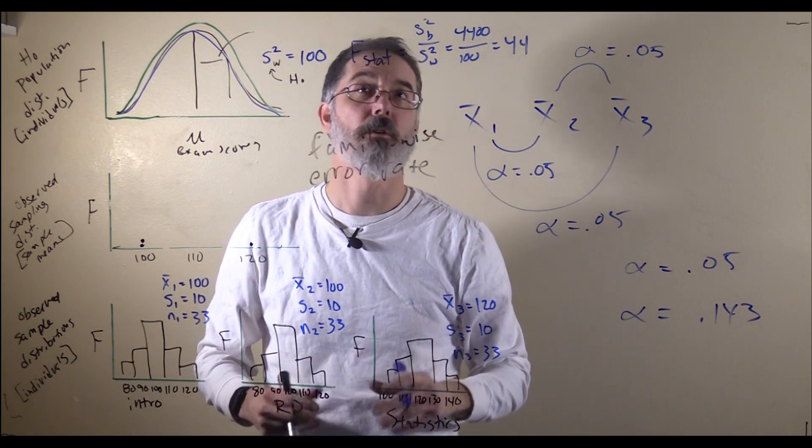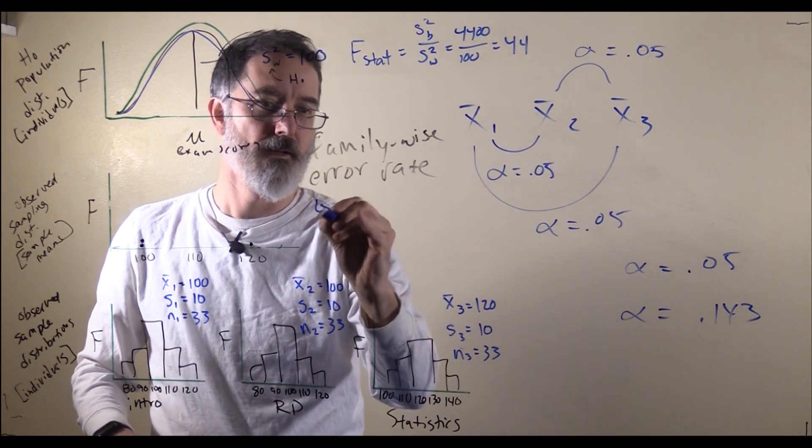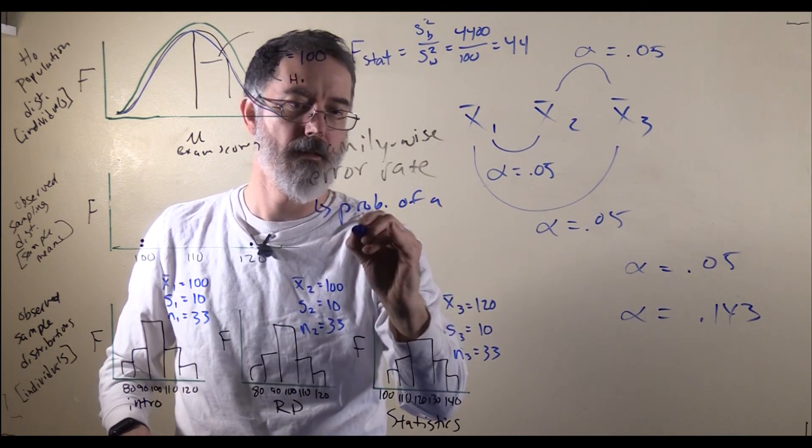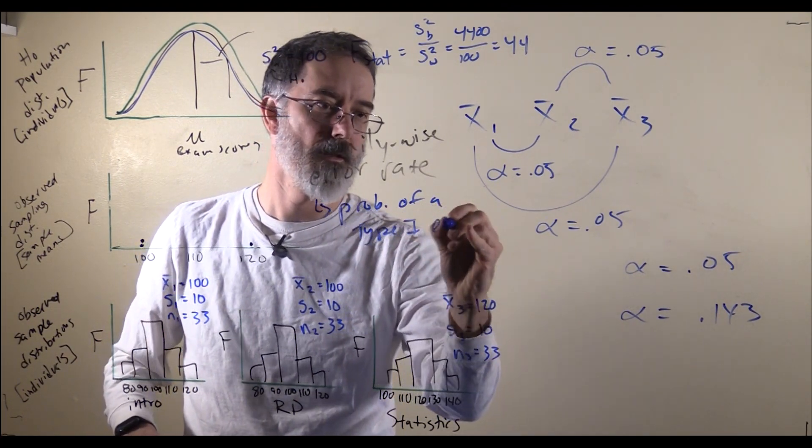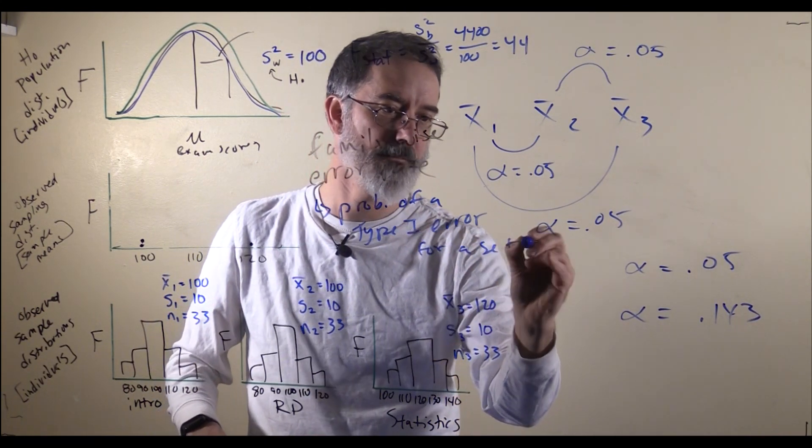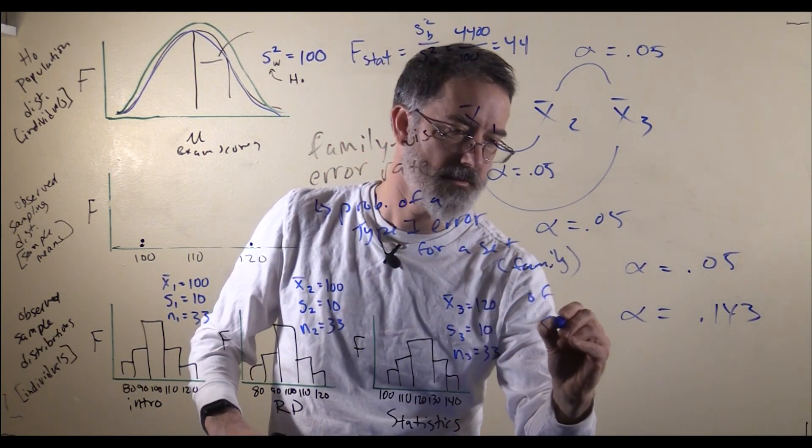Your false positives are higher if you do more comparisons. The family-wise error rate is the probability of a type 1 error for a set that is a family of statistical tests.